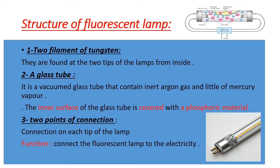The structure of the fluorescent lamp. As we see, the fluorescent lamp is a glass tube. It consists of: number one, two filaments of tungsten found at the two tips of the lamp from inside; number two, a glass tube — not glass bulb — vacuumed or containing inert argon gas and a little amount of mercury vapor, and the inner surface of the glass tube is covered with phosphoric material; number three, two points of connection on each side.